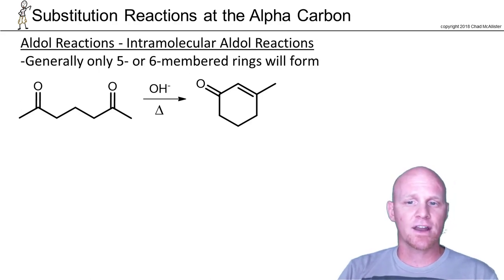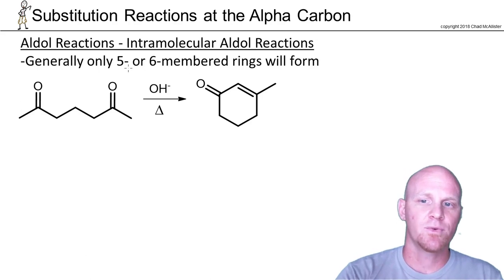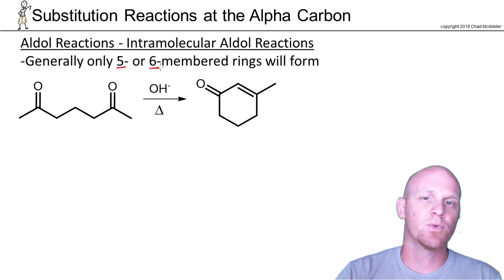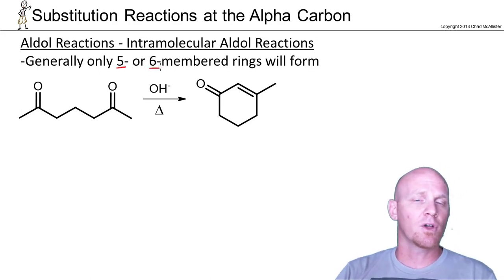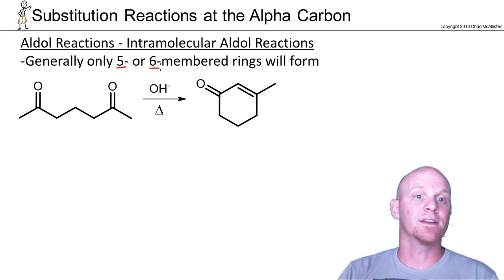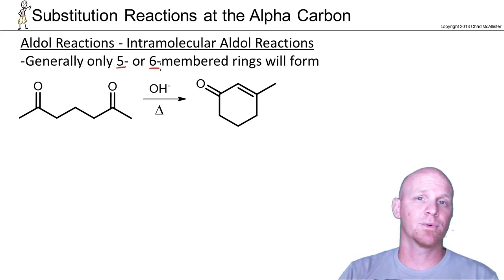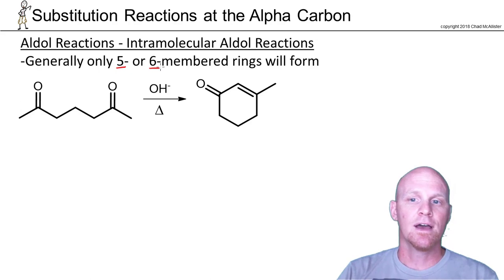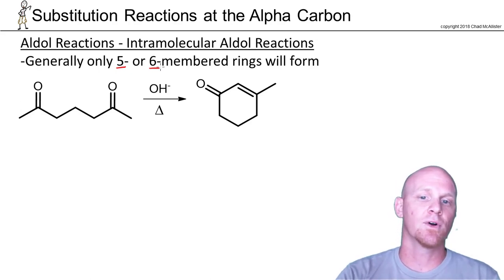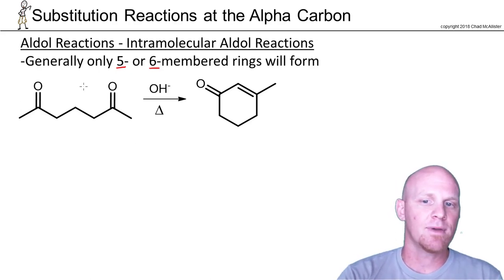In this case I've got a diketone, and the key to remember here is that generally only five or six-membered rings are going to form. Forming smaller than a five-membered ring is not going to happen due to ring strain, and forming larger than a six-membered ring is also not going to happen due to ring strain. So generally you're only going to predict five or six-membered rings forming.